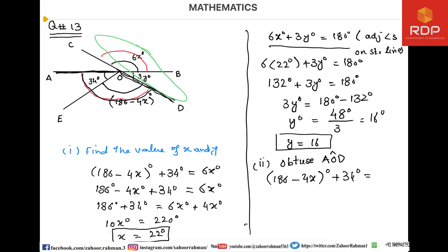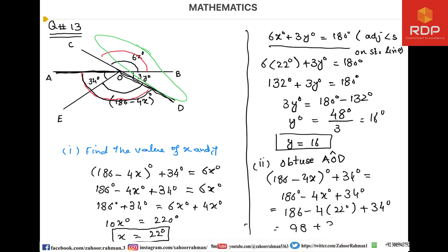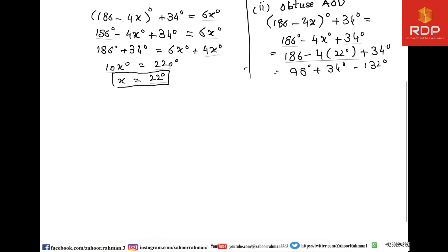To find obtuse AOD: (186 − 4x)° + 34°. Inserting x = 22: 186 − 4×22 = 186 − 88 = 98°, and 98° + 34° = 132°. So obtuse AOD = 132°.